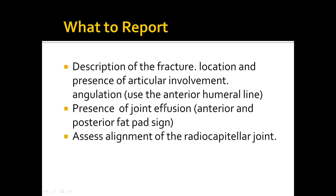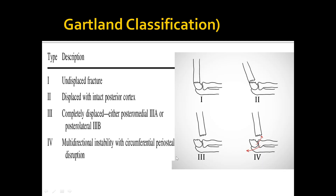Whenever you see a supracondylar fracture, first assess the fracture location, then the presence of articular involvement, and any angulation — which can be detected using the anterior humeral line. Also assess the presence of joint effusion using indirect signs such as the anterior and posterior fat pad signs, and check the alignment of the radiocapitellar joint.